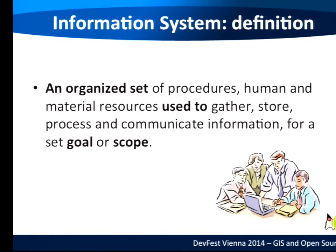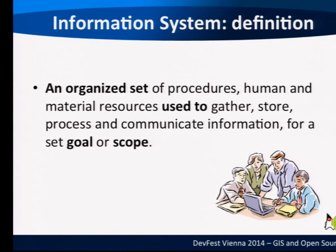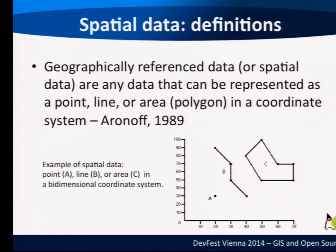Many of you are already from an IT background, so I might go a little bit faster than I normally would. I want to introduce some definitions — if you know them already, it's good just to take a look again. What is an information system? It is an organized set of procedures, human and material resources, used to gather, store, process, and communicate information for a set goal or scope. An information system doesn't have to be a computer.